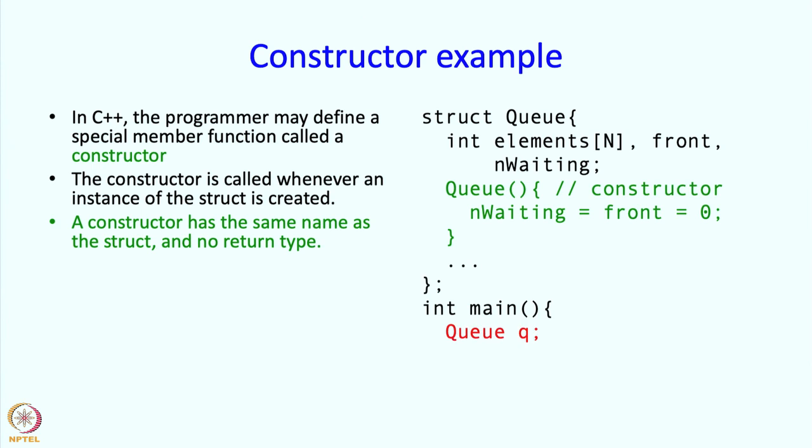In main, the moment I define q as an object of structure type Q, this code is automatically going to be called. The variables will be created and then this code will be called.